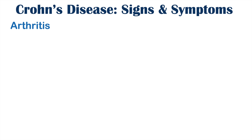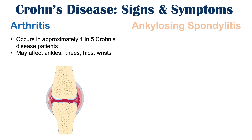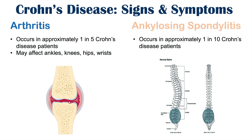Arthritis is another extra-intestinal finding, affecting a large number of Crohn's disease patients — approximately one in five. The areas commonly affected include the ankles, knees, hips, and wrists. Ankylosing spondylitis is also associated with Crohn's disease; approximately one in ten Crohn's disease patients will suffer from it. A full lesson on ankylosing spondylitis is available for more detail.